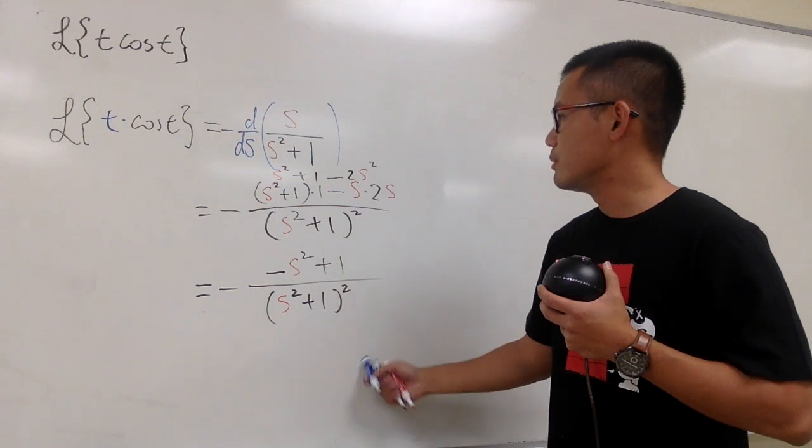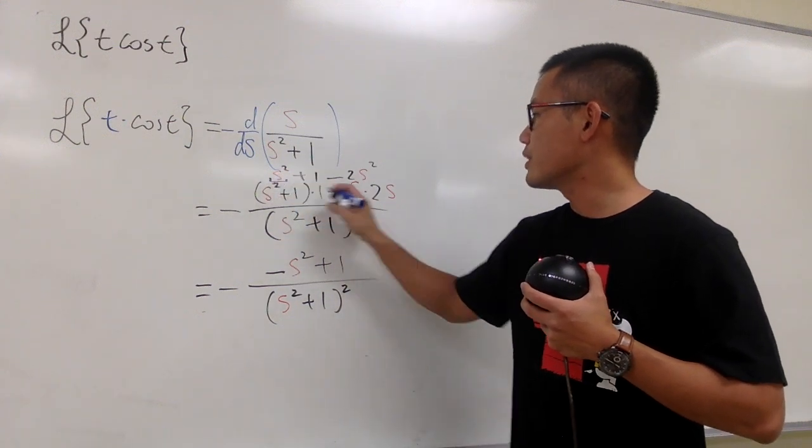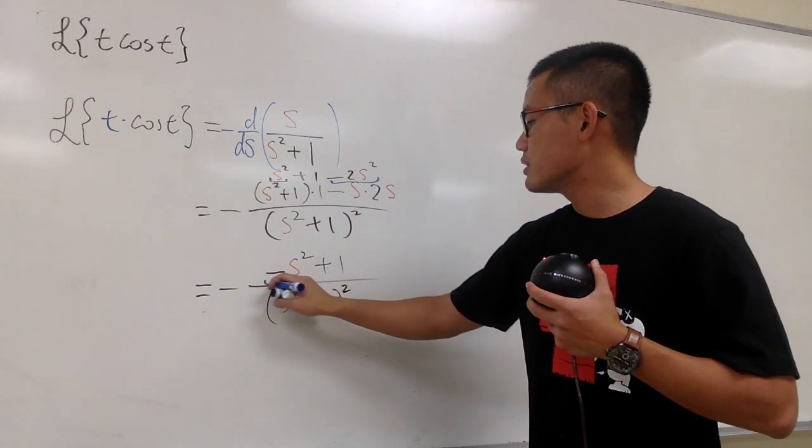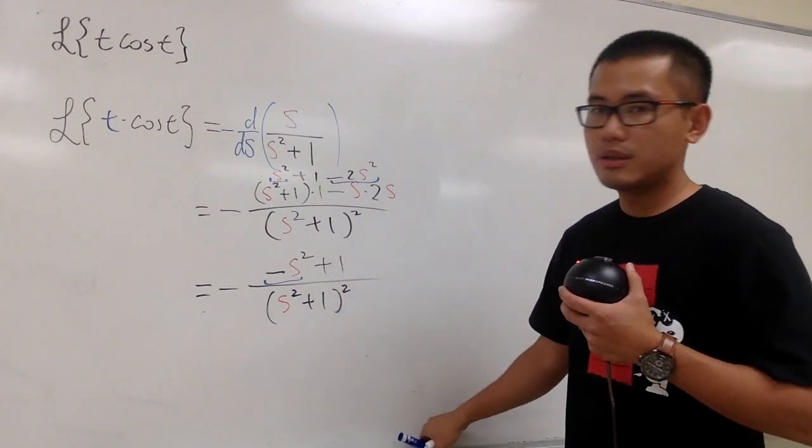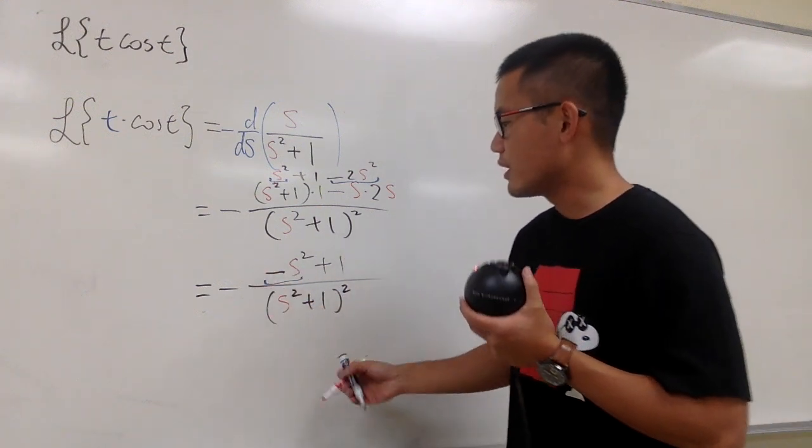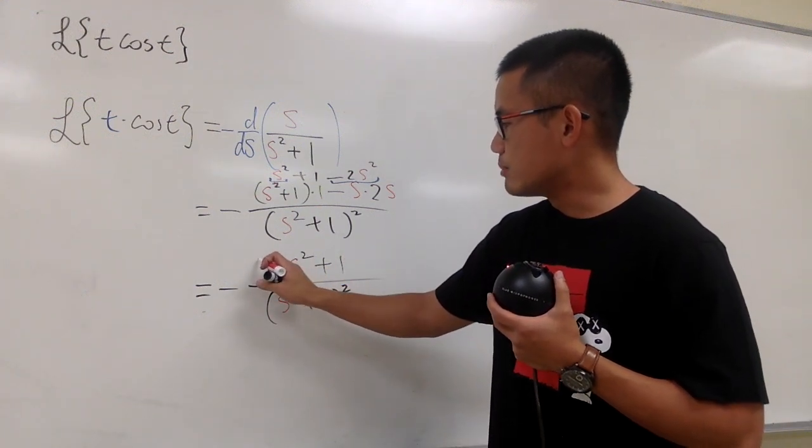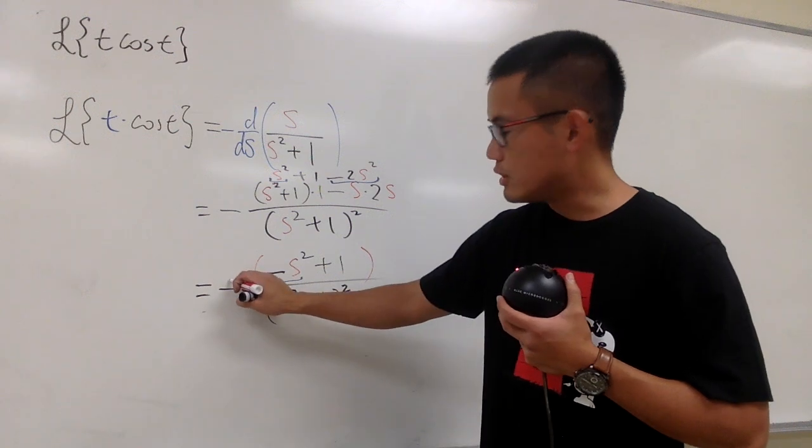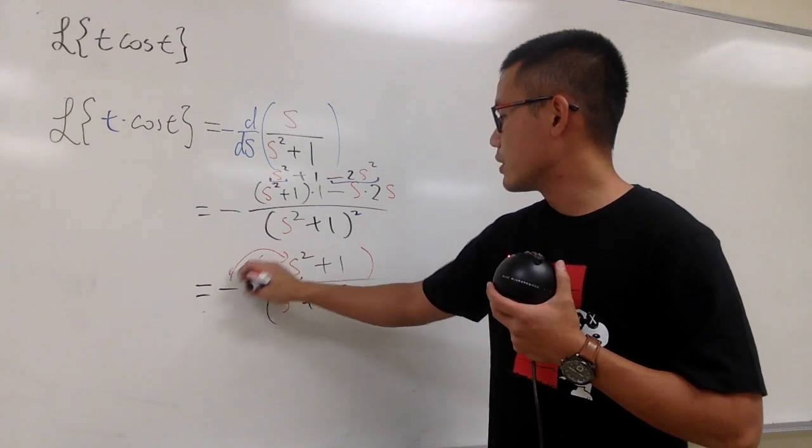Once again, we still have the negative in the front. And technically, there's an invisible parenthesis on the top. So distribute this negative into the parenthesis.